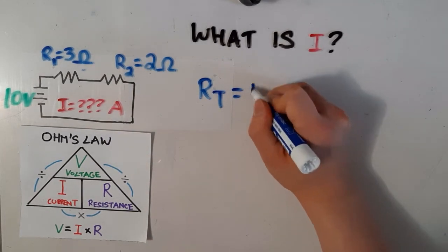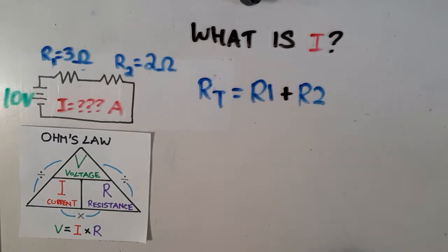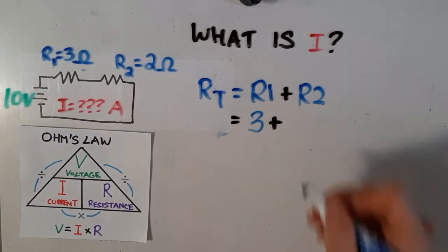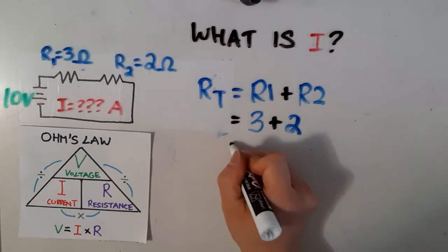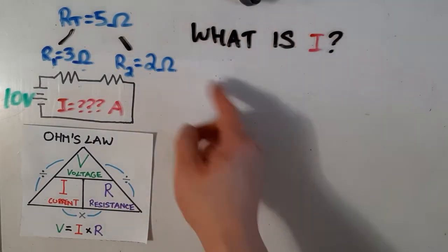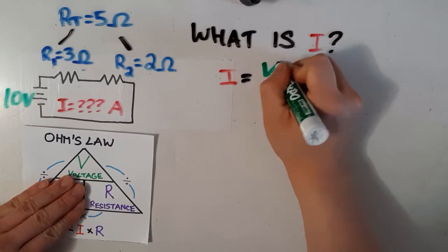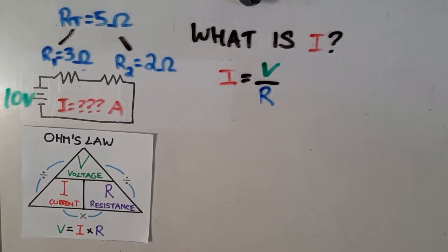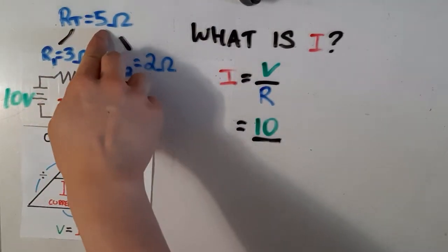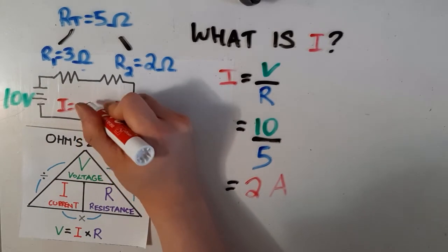To find total resistance, we add R1 plus R2: 3 ohms plus 2 ohms gives a total resistance of 5 ohms. Now that we know the total resistance, we can solve for total current using I equals V divided by R. That's 10 volts divided by 5 ohms — 10 divided by 5 is 2 amps. There are 2 amps of current flowing through this circuit.